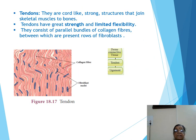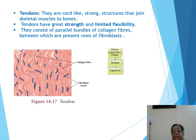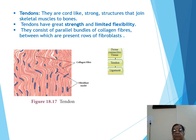The next tissue is tendons, a type of dense connective tissue. Tendons are cord-like strong structures that join the skeletal muscles to bones. They are present in muscles such as the triceps and biceps. Tendons have great strength and limited flexibility.